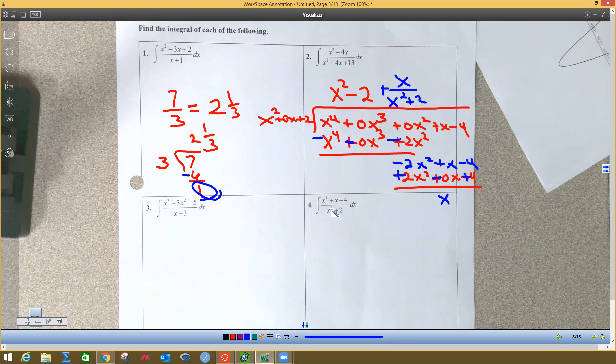So we're going to rewrite this. This is the same exact thing, just rewritten, so this is the integral. Let me get this out of the way. So this is the integral of x squared minus two plus x over x squared plus two. Now again, these things are equal. This thing in parentheses is equal to this thing between the integral and the dx. They're the same, just rewritten, just like two and one-thirds the same as seven-thirds.